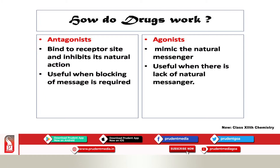Drugs work in two ways: as antagonists or agonists. Antagonists bind to the receptor site and inhibit its natural action, whereas agonists mimic the natural messenger. Antagonists are used when we don't want a particular message to reach the body — for example, during sickness. Agonists are useful when the body is lacking natural messengers and drugs are given to compensate for that deficiency.